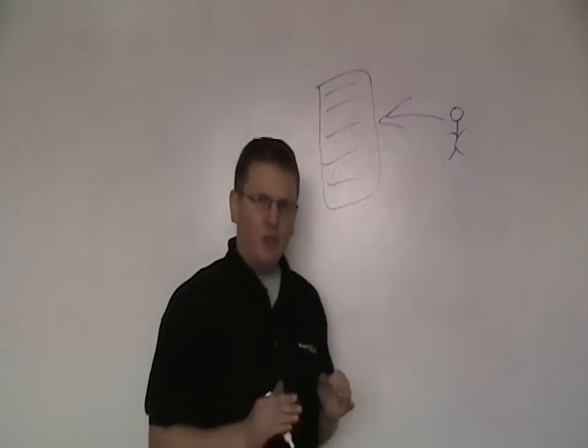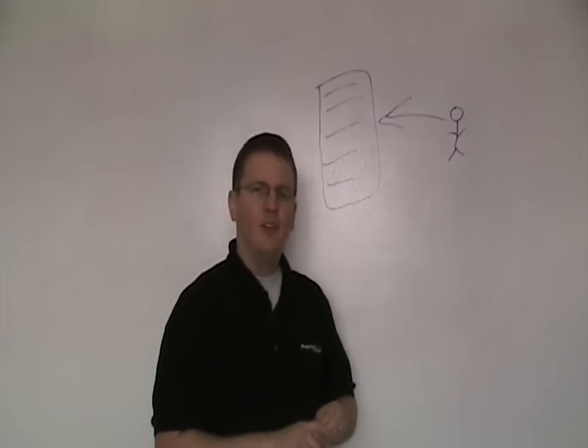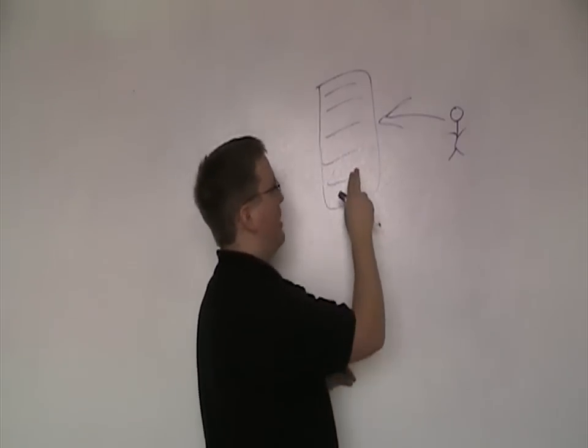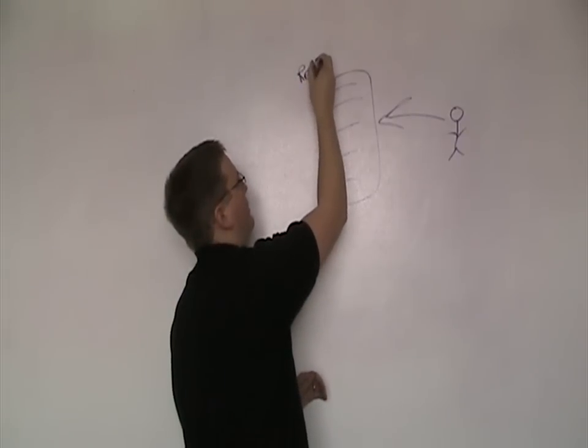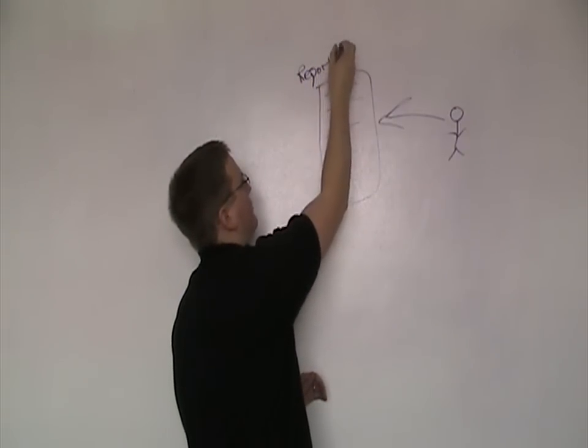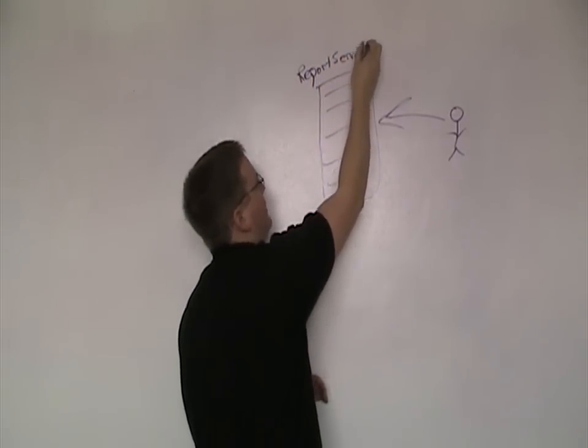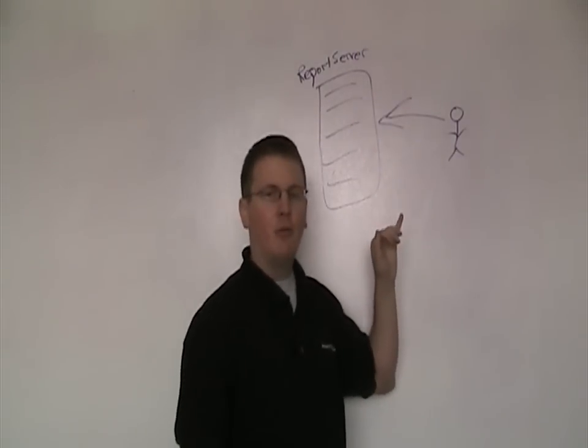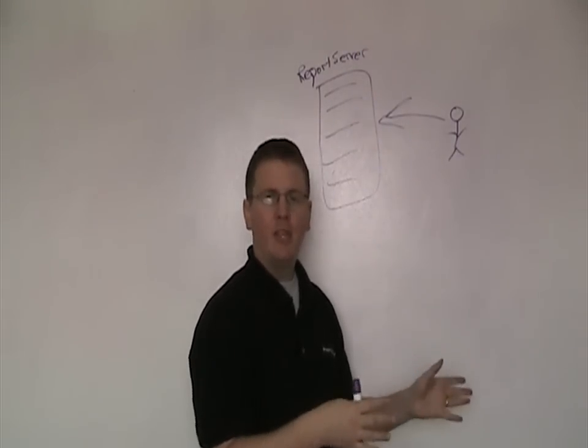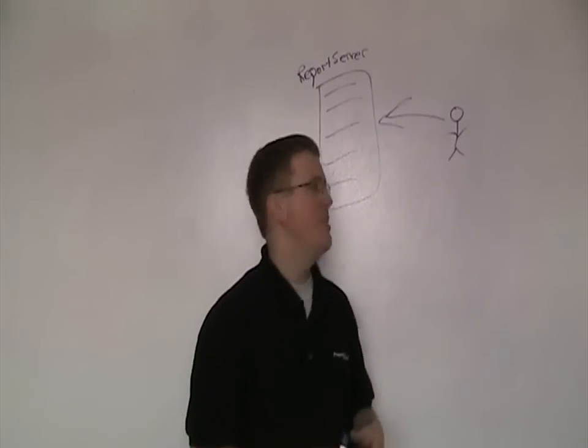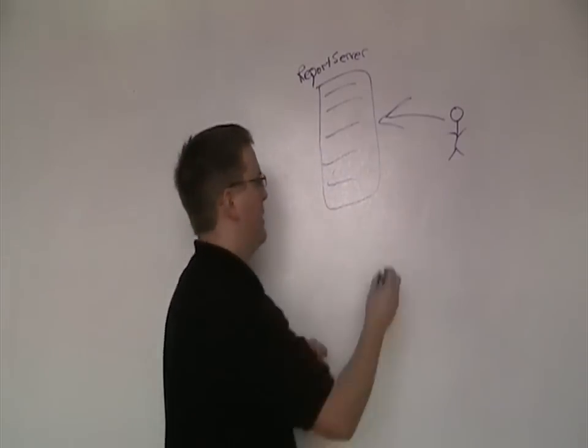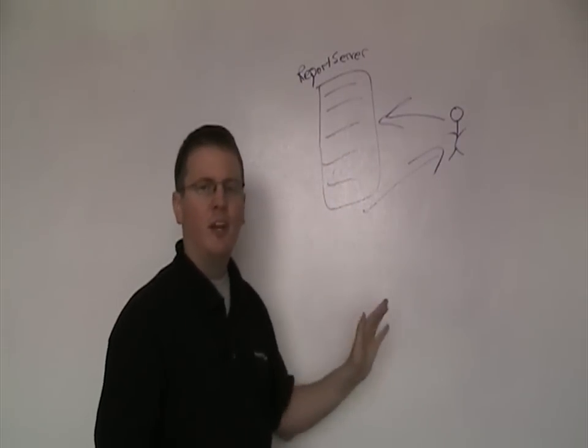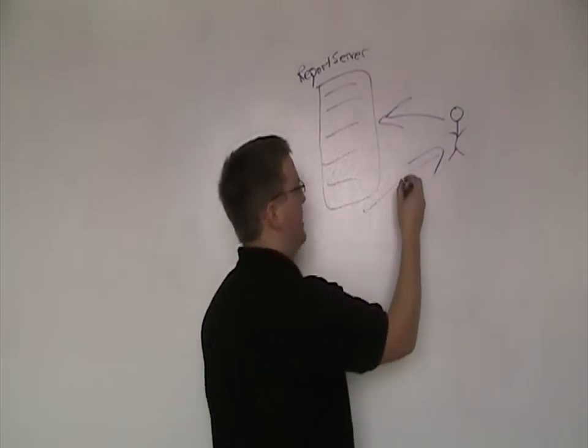So there's two ways that you can do subscriptions. The first way that I'll talk about is going to be the email way. So I can make it so that my report server, this is my report server on the left, is going to deliver those emails that contain my report, already rendered and put into the format that they want, whether it's PDF or Excel. It's going to send that user an email so that they don't even have to go and access the database. It's sent directly to them via email.